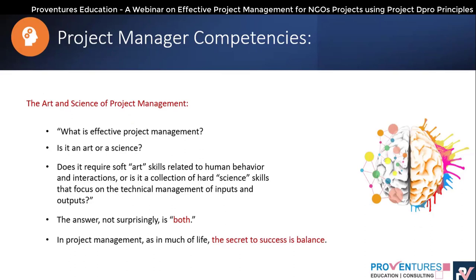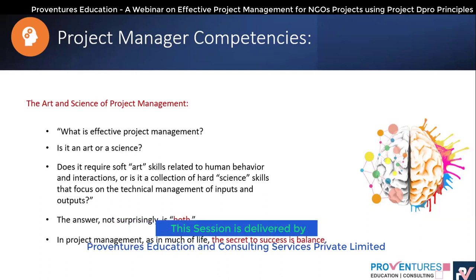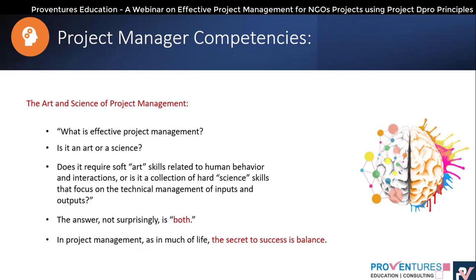Is project management an art or a science? Surprisingly, it's both. The science includes processes, triple constraints, and tools to manage things. But along with that science, communication with people is needed — with human resources there should be empathy and a human touch. Communication and convincing people is an art. Project management is a fusion of both art and science.